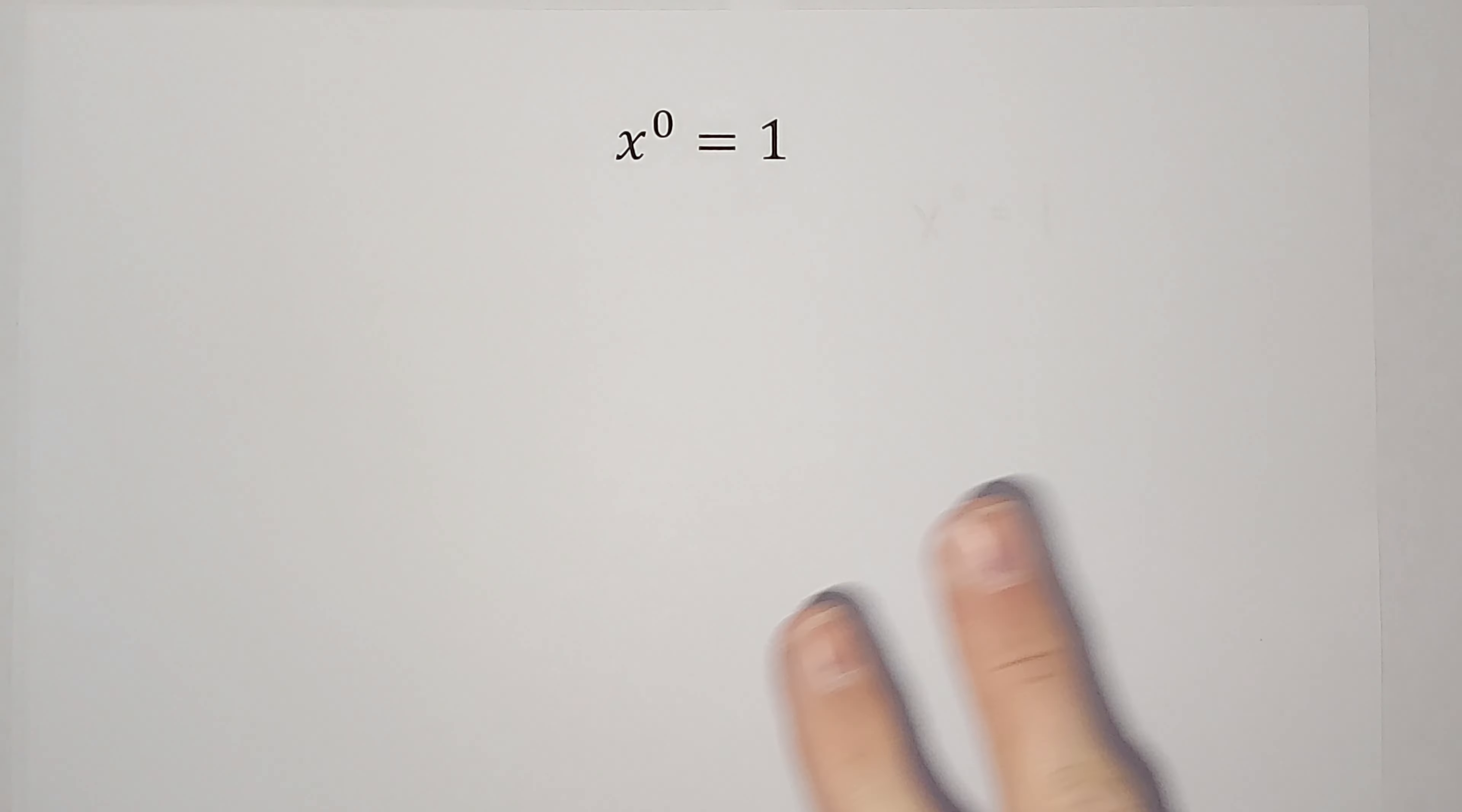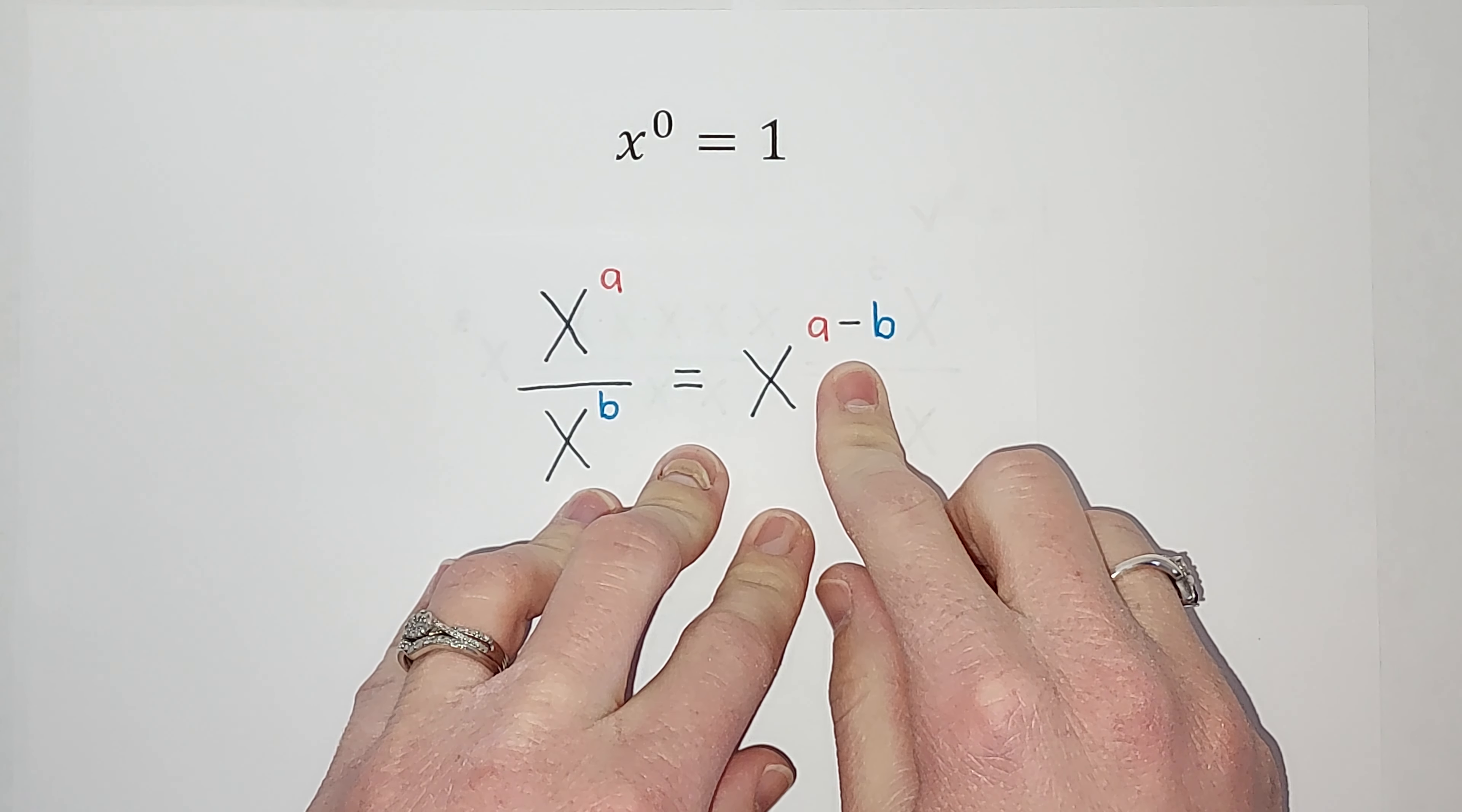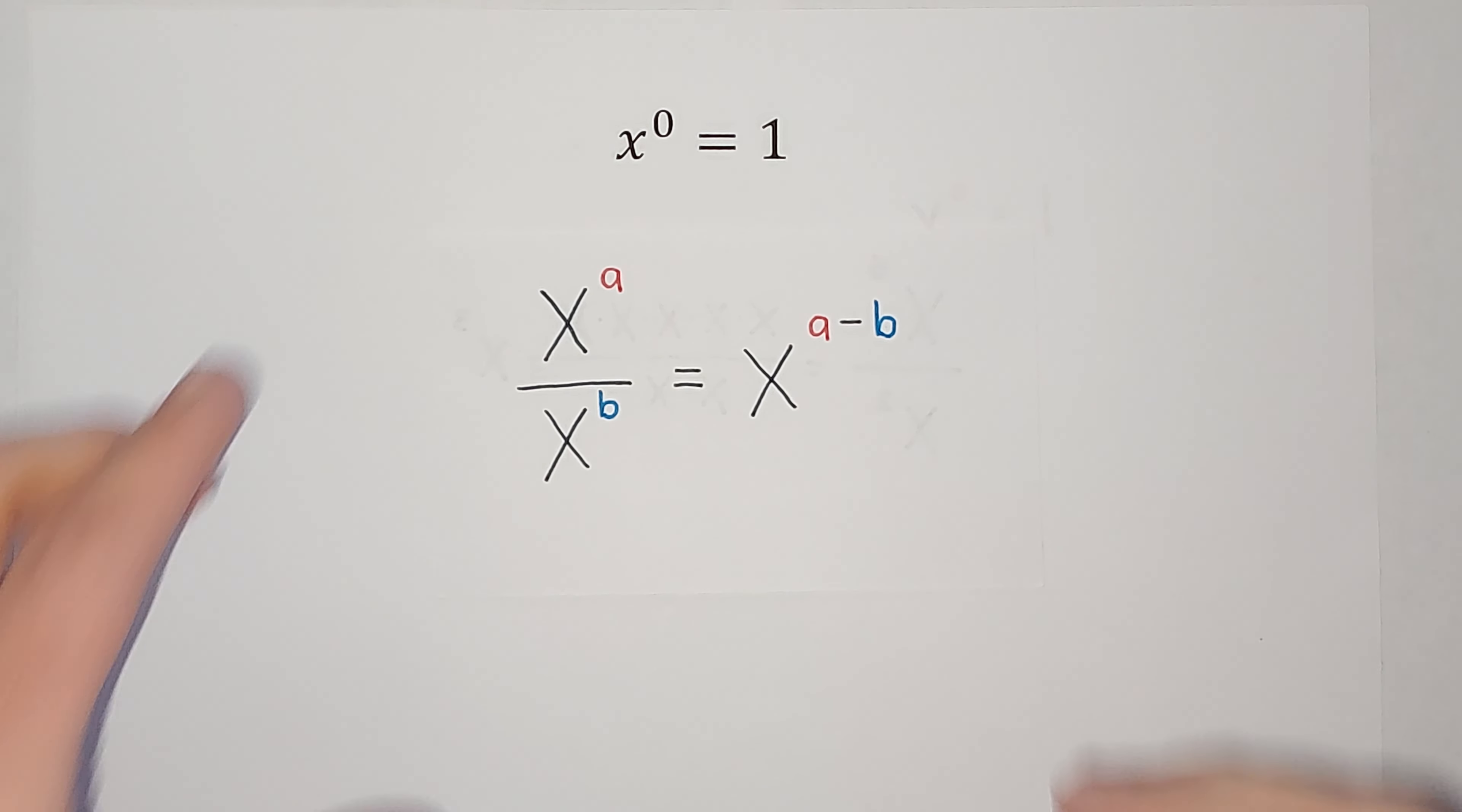In order to prove that this is true we need to agree on two things. The first is a rule of exponents - that when we divide exponents that have the same base, all we have to do is subtract the exponents. If this is unfamiliar to you I will link a video, but I'm assuming you're probably familiar with it.